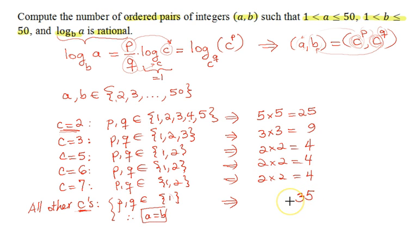When we add all these, we get 25 plus 9 is 34, plus 4 is 38, 42, 46, plus 35 we should get 81, and that's our answer to this problem. That finishes the solution. See you all in our next session.